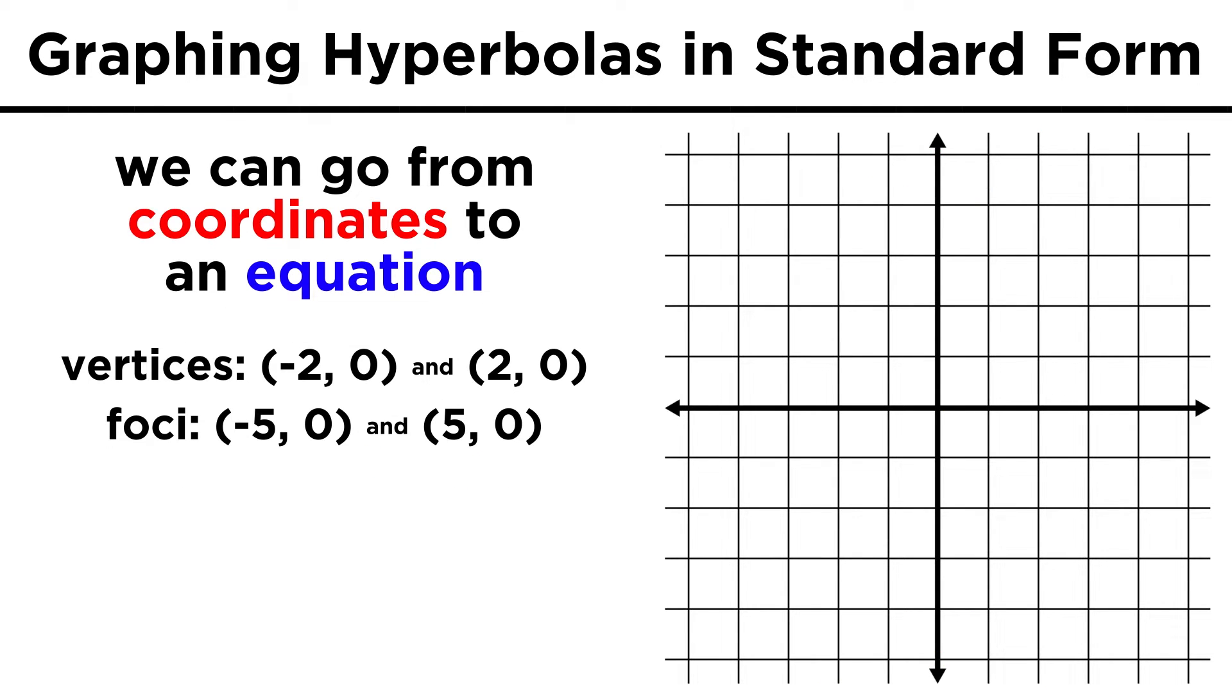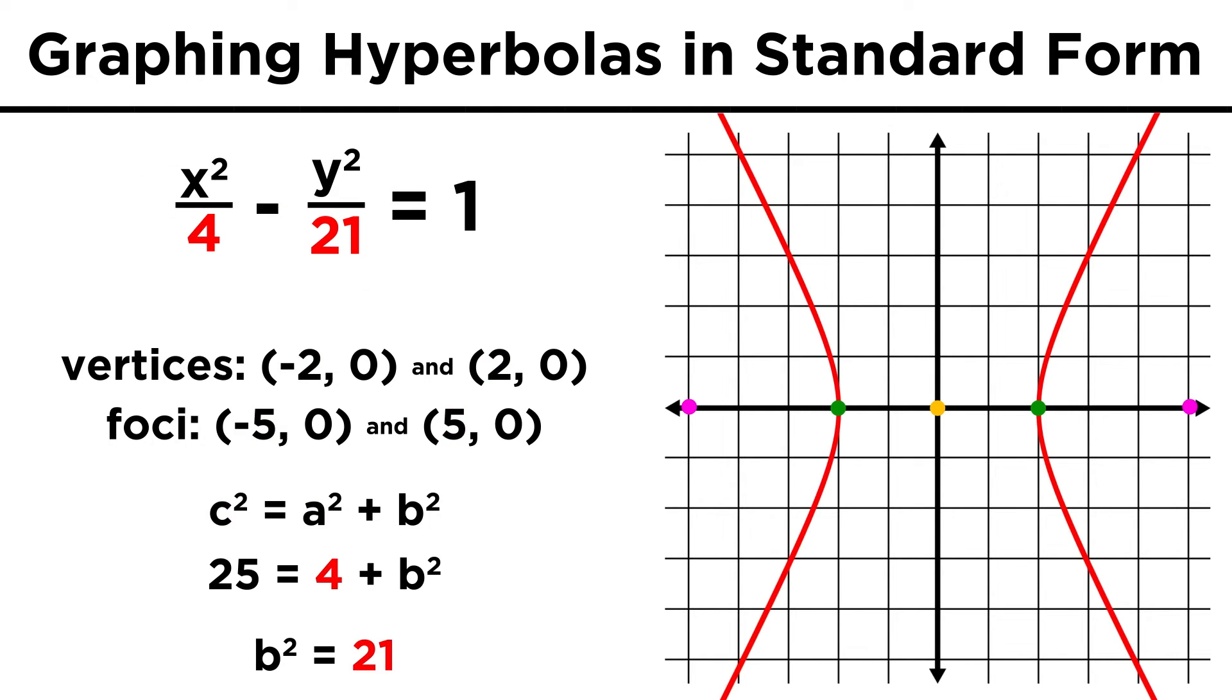Just like with ellipses, we can also be given coordinates for vertices and foci and generate the equation from that. Vertices on the x axis at plus and minus two, and foci at plus and minus five, means that twenty-five equals four plus b squared, which makes b squared twenty-one. So our a squared and b squared terms go here. The x term comes first since it's horizontal, and that's the equation for the hyperbola.